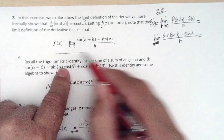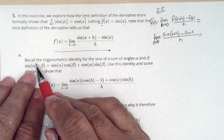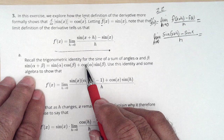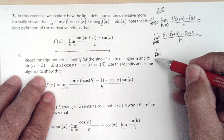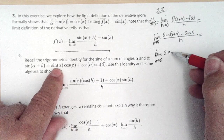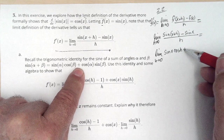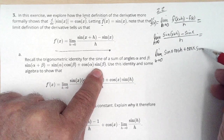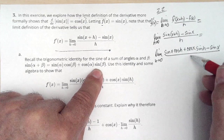Then, and that gets us to what they wanted us to show. Then it says, use this identity — the sine of two angles added is sine of the first cosine of the second plus cosine of the first sine of the second. So we have the sine of two angles added, so this becomes the limit as h approaches 0 of sine of x cosine of h plus cosine of x sine of h, and then we have minus sine x, all over h.